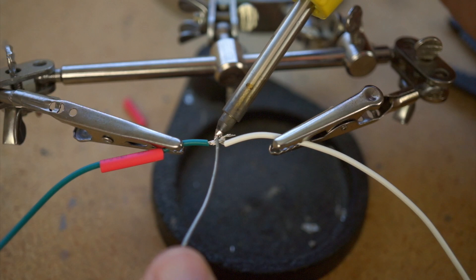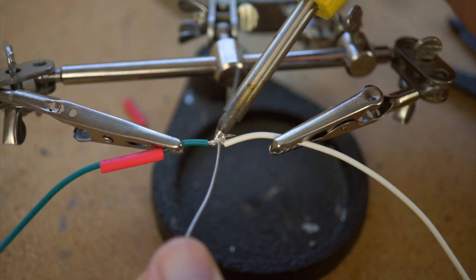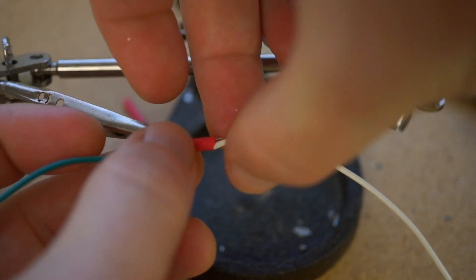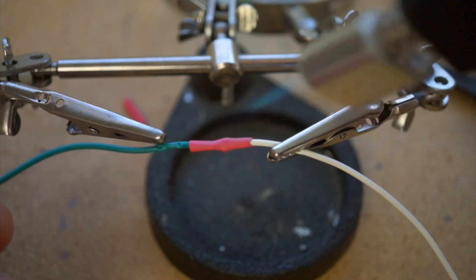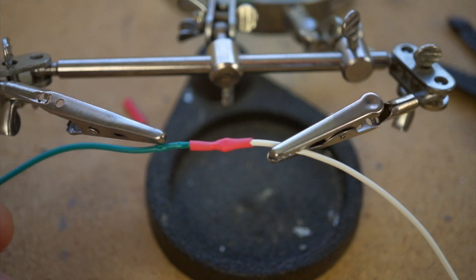You just cut the length you need, slip it on before you solder, and then heat it in place when you're done, either with a heat gun, a mini butane torch, or even a lighter or soldering iron if you're in a pinch.